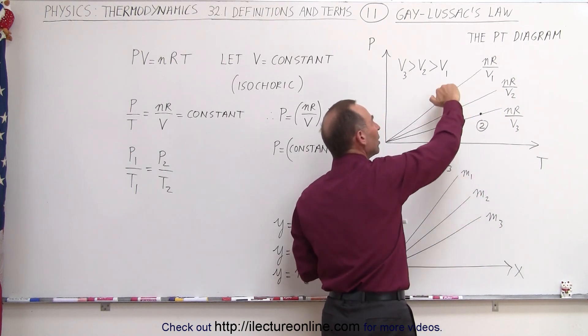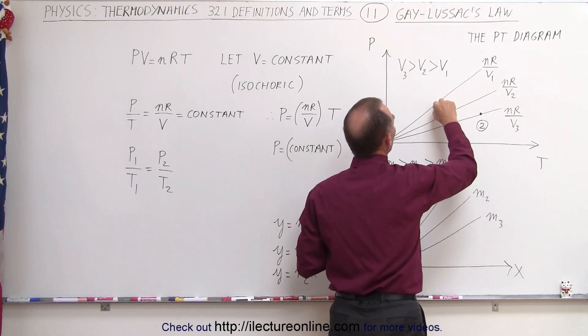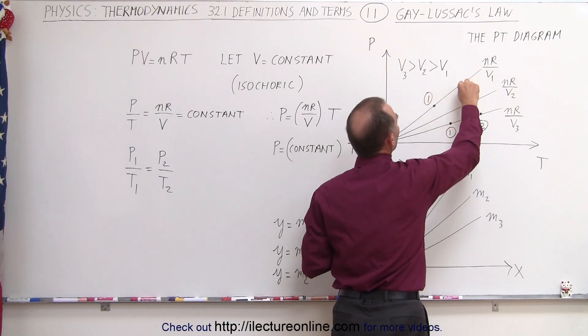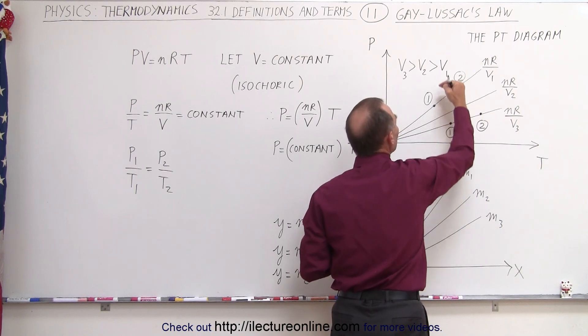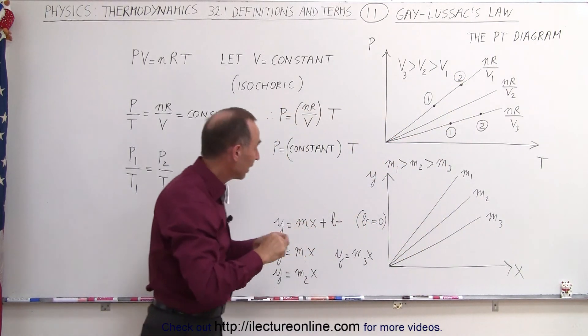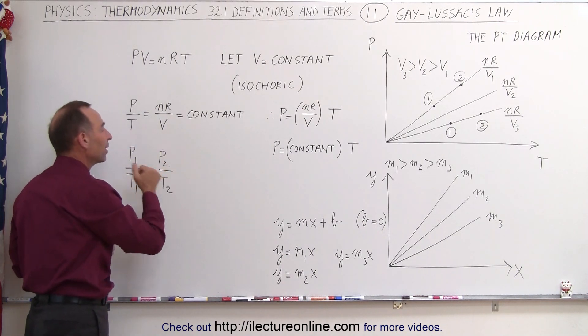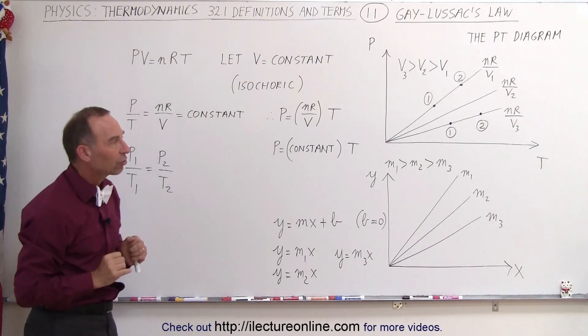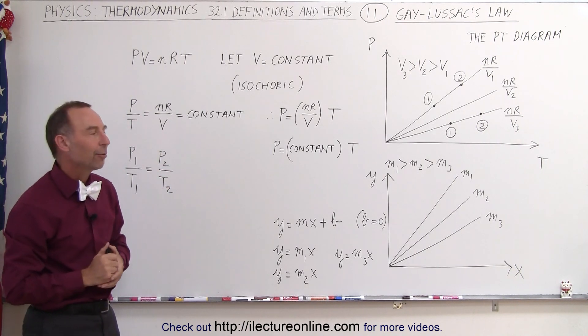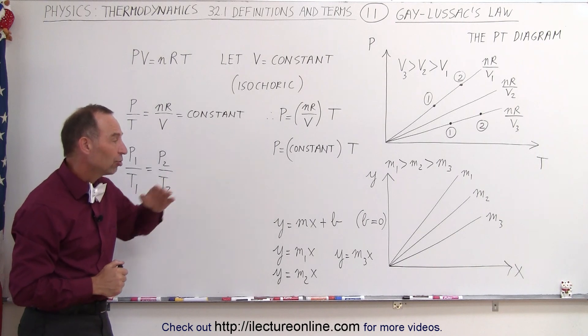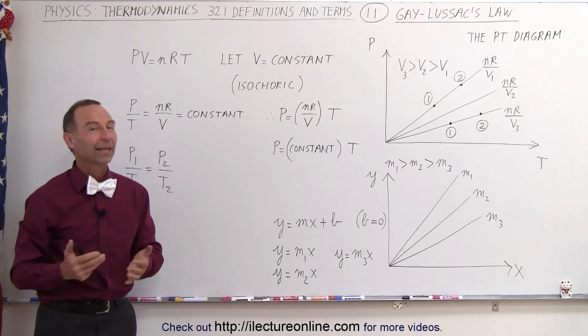Regardless of which line we're on. If we're on this line right here, and we call this state 1, and we call this state 2, again, whatever the change is in the temperature, there will be a proportional change in the pressure, in such a way that the ratio P1 divided by T1 must equal P2 divided by T2. And that's what we mean by Gay-Lussac's law, and that's how it's illustrated on a P-T diagram. And again, the relationship between the linear function y equals mx plus b. And that's how it's done.